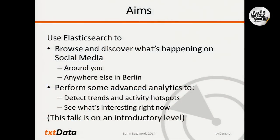So what do we want to do? We want to use Elasticsearch to browse and discover what's happening on social media, paying special attention to the spatial nature of the data — we want to see what's happening around you right now or anywhere else in Berlin. We also want to perform more advanced analytics to detect trends and activity hotspots. This talk is at a fairly introductory level, so even if you've never heard about Elasticsearch before, you can probably follow along.